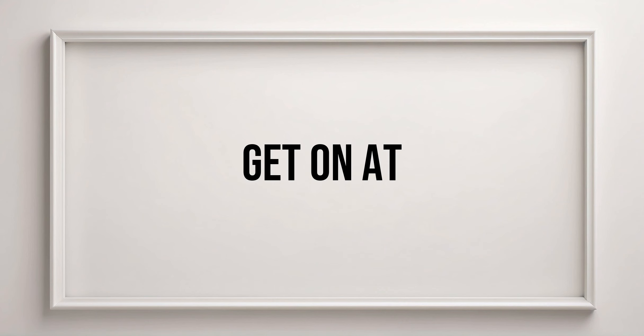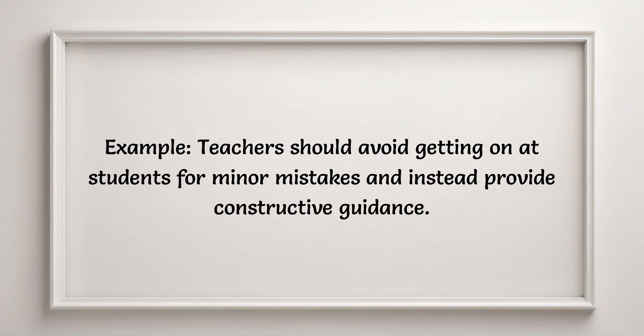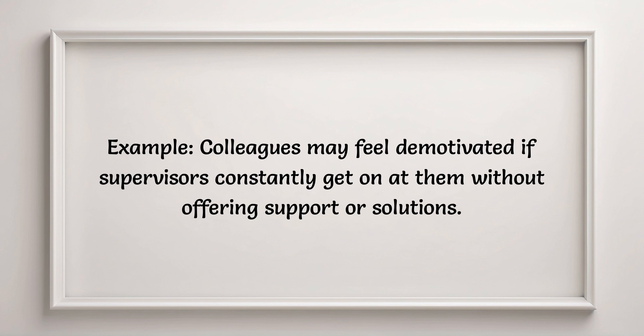Get on at. Meaning: to criticize or scold someone for their behavior. Example: teachers should avoid getting on at students for minor mistakes and instead provide constructive guidance. Example: colleagues may feel demotivated if supervisors constantly get on at them without offering support or solutions.